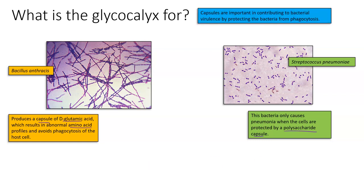To summarize, the capsule is very important in contributing to bacterial virulence by protecting the bacteria from phagocytosis. Our normal immune response wants to employ a process called phagocytosis, which brings these bacteria cells into our macrophages and other immune response cells in order to break them down. The capsule helps protect these bacteria, and if they're protected, they can lead to an increase in virulence or pathogenicity — they can cause disease at a higher and quicker rate.